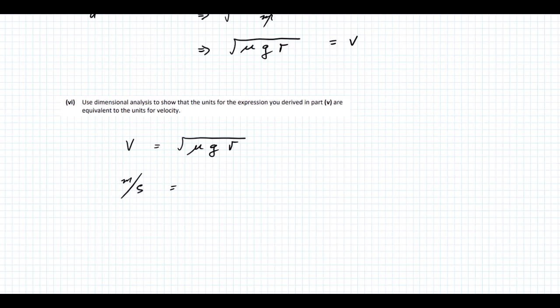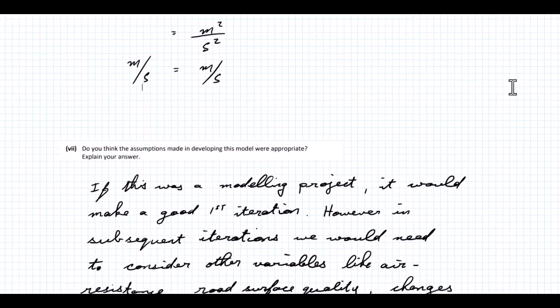We can ignore the square root and mu has no units. Our g has units meters per second squared, and our R has units meters. So we end up with meters squared over seconds squared, which is just meters per second. We do end up with the same units on the right and left hand side. That's it for that question.